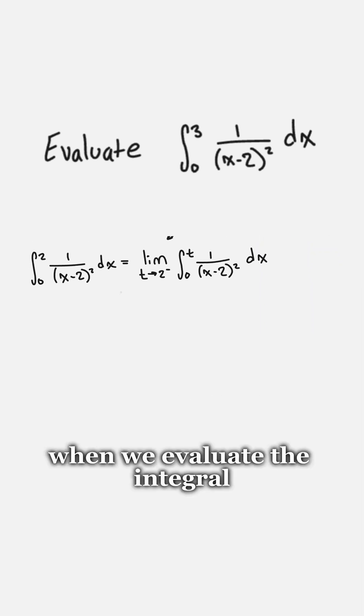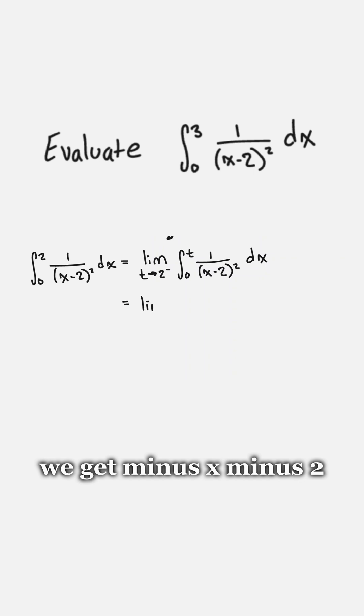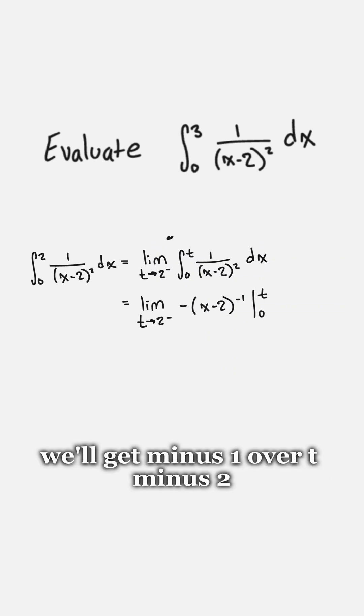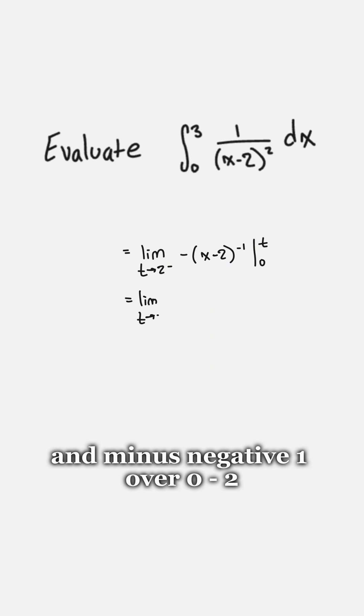When we evaluate the integral we get minus x minus 2 to the power of negative 1, evaluated from 0 to t. So when we plug that in we'll get minus 1 over t minus 2, and minus negative 1 over 0 minus 2.